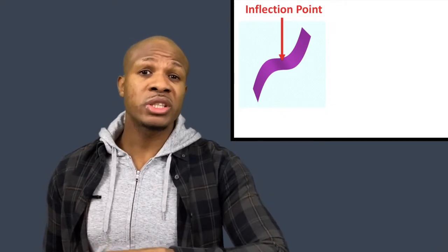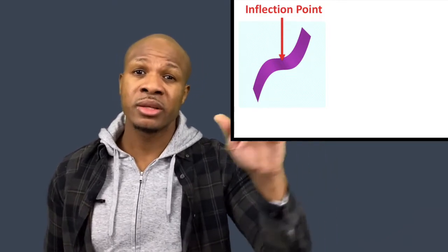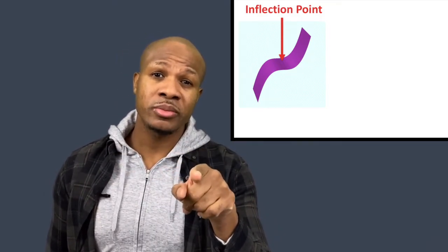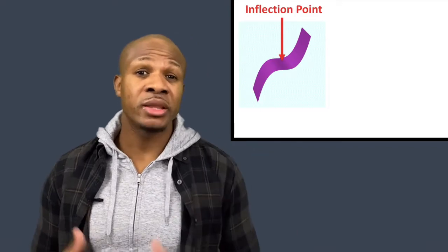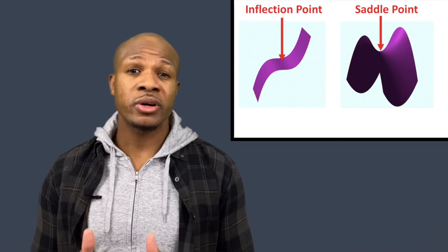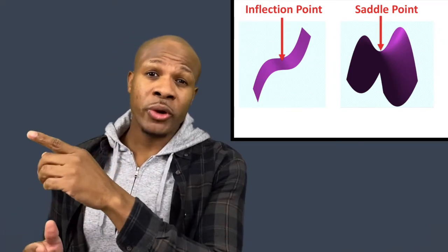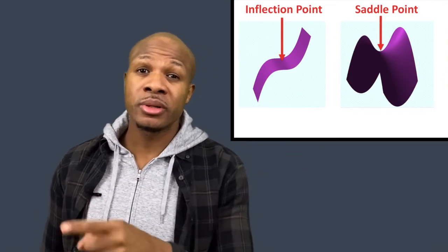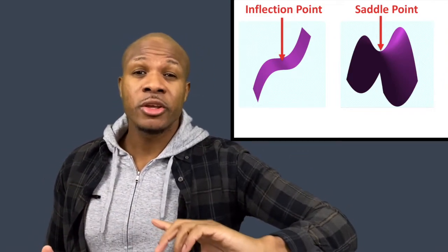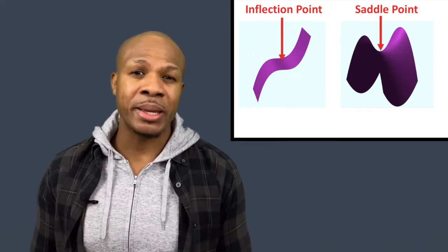There are other stationary points too. For example, an inflection point is where a function is increasing, then flattens out for a little bit, and then starts increasing again — that point where it flattens out is called an inflection point. Then there's another classic stationary point called a saddle point, shaped like a saddle around that point. In one direction you get upward curvature, but in the other direction you get downward curvature — it's a point where there's a maximum and a minimum at the same time.